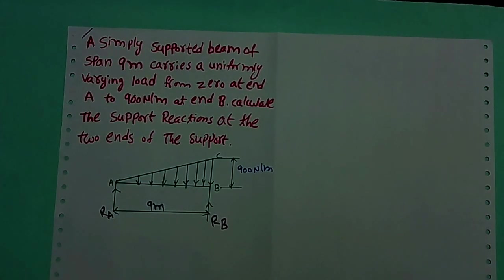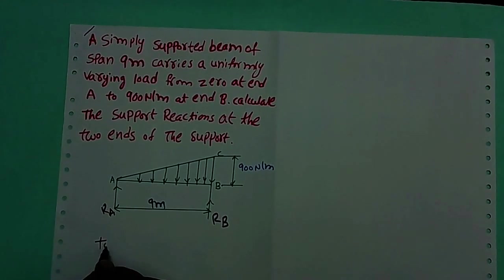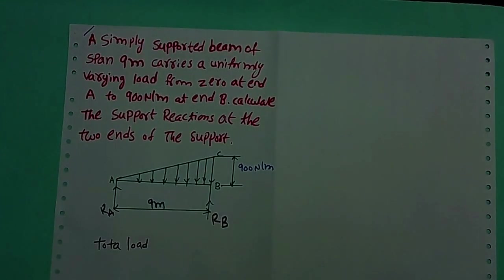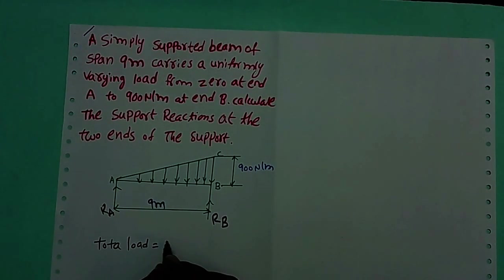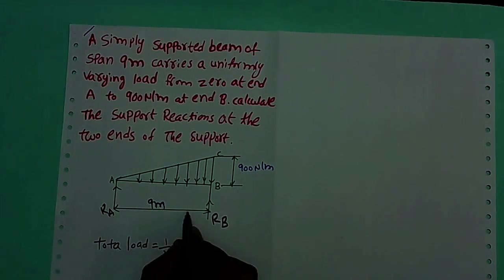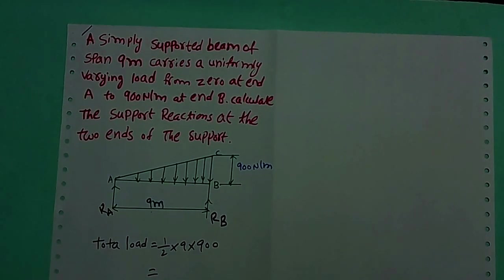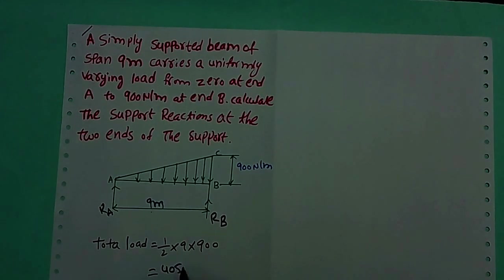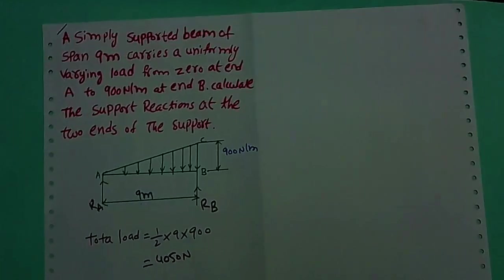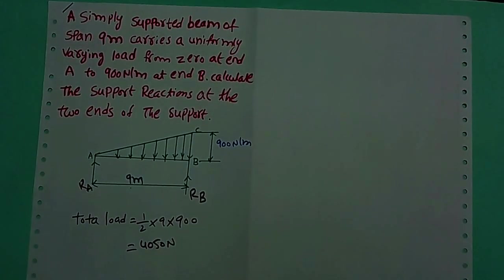First, we have to find the total load acting on beam AB. Total load equals the area under the load diagram. The shape of ABC is a triangle. Area of triangle equals half into base into height = half into 9 into 900, that equals 4050 N. So the total load acting on beam AB is 4050 N.